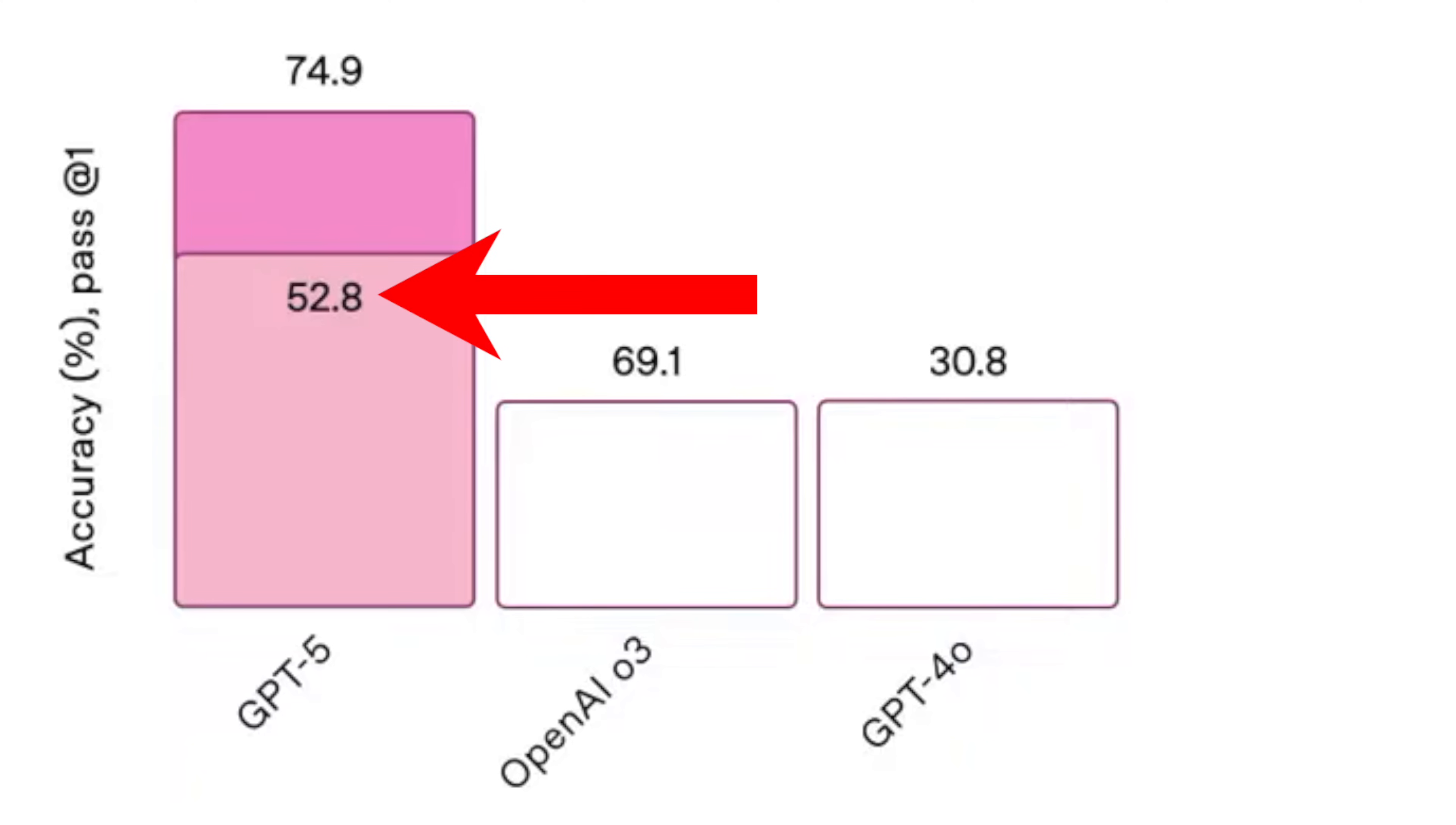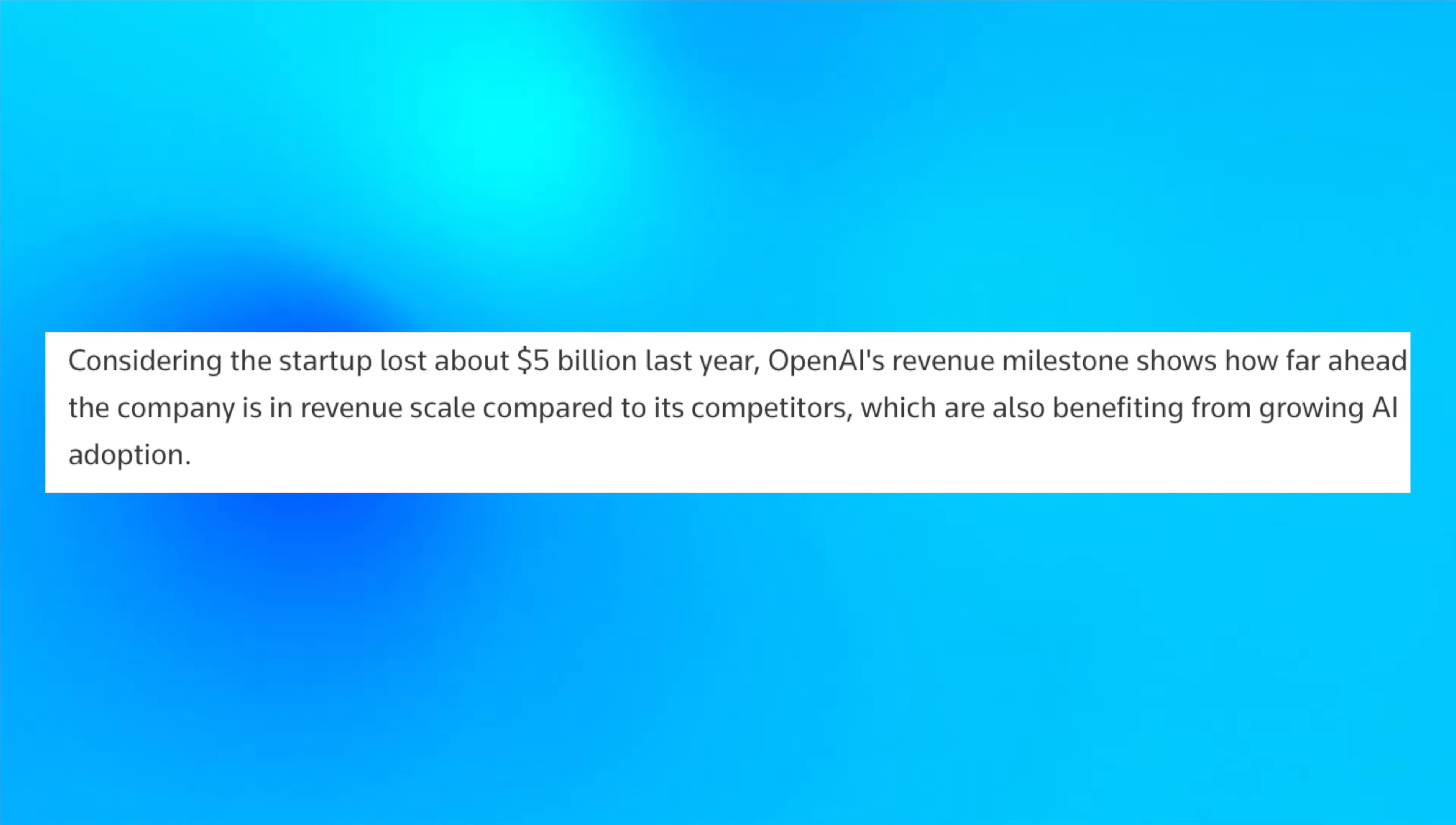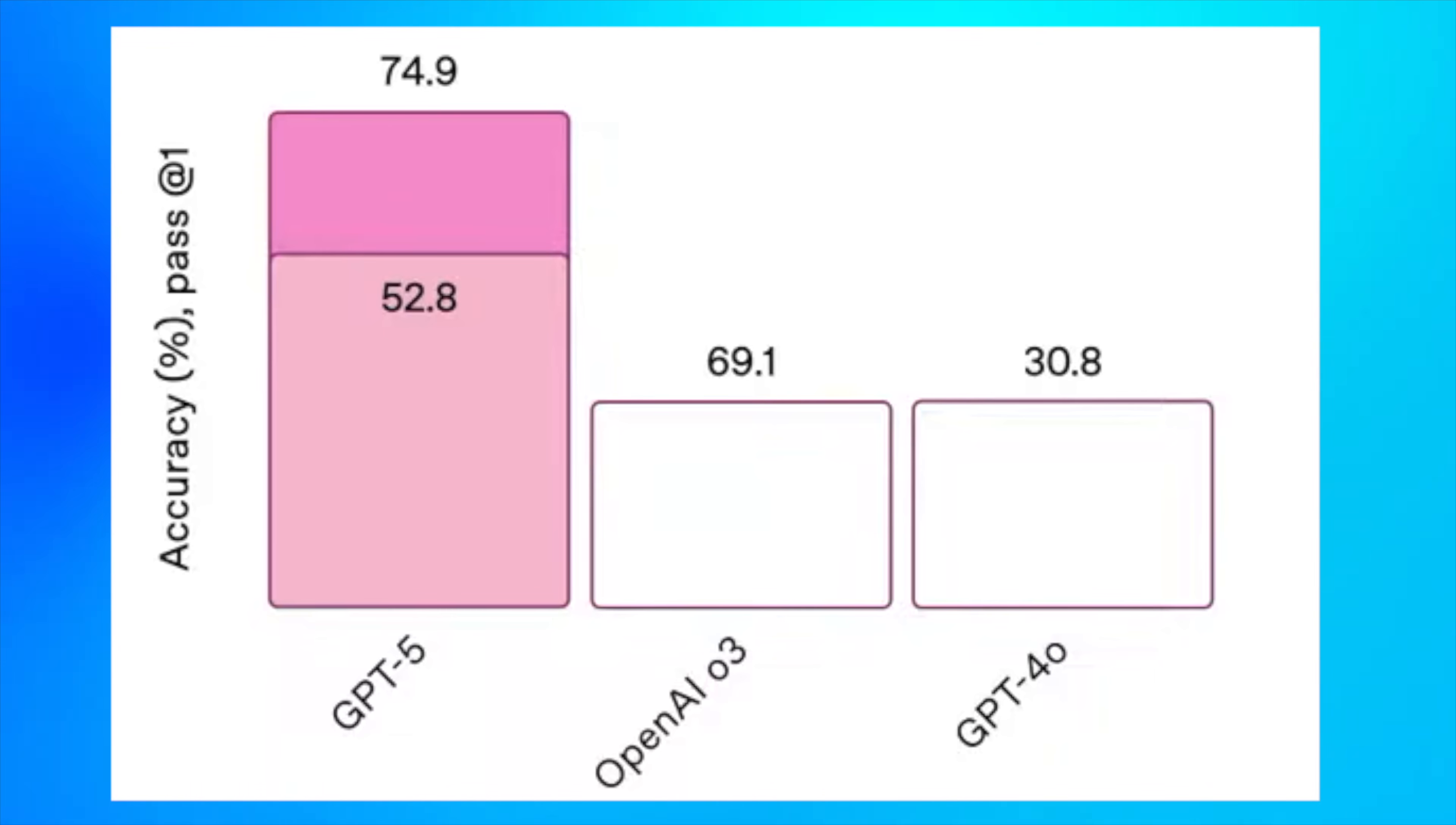Really, are we supposed to believe that 52.8 is bigger than 69.1, which is the same size as 30.8? What is the point of this bar chart? It doesn't make any sense whatsoever. I don't understand how they're able to get away with this. And let's remember that this is a private company that's seeking over 500 billion in valuation, despite being unprofitable and producing graphs which could be made by someone in primary school.